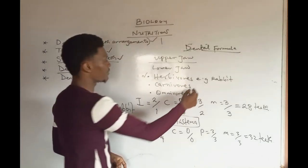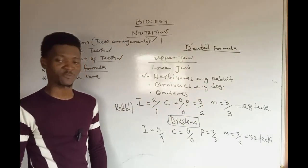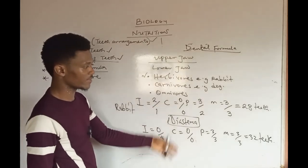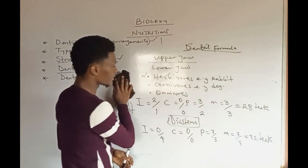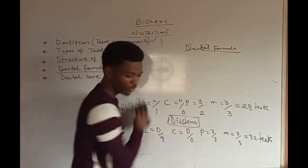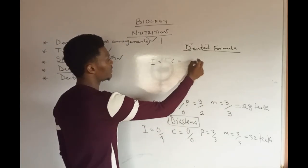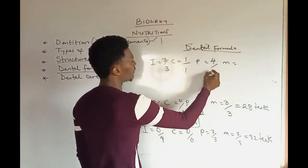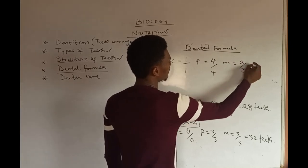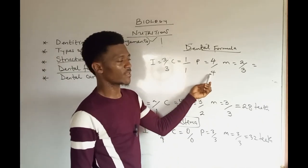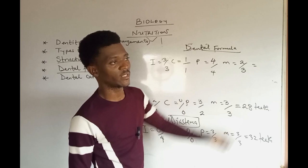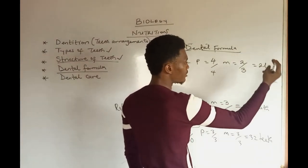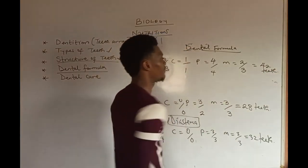The next is the carnivore, and the classical example is the dog. For the dental formula of dog: incisors are 3 over 3, canines are 1 over 1, premolars are 4 over 4, and molars are 2 over 3. Summing up: 6, then 8, giving 16, then adding gives 21. So 21 times 2 gives 42 as the total number of teeth in a dog.